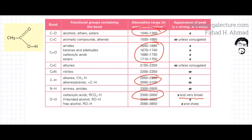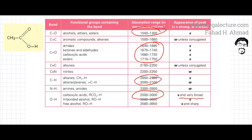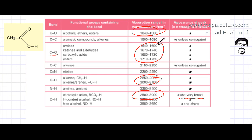One thing you would notice is that these bonds absorbing wave numbers around 2,500 to 3,000 — their frequencies are all jumbled up and mixed, so it's very hard to figure out which bonds are actually absorbing frequencies. However, a few bonds are very easily identifiable. One is the C=O bond — always very easily identifiable because its wave numbers are very unique, absorbing around 1,600 to 1,750, and no other bond comes close to that range.